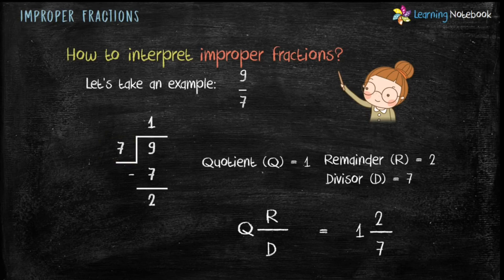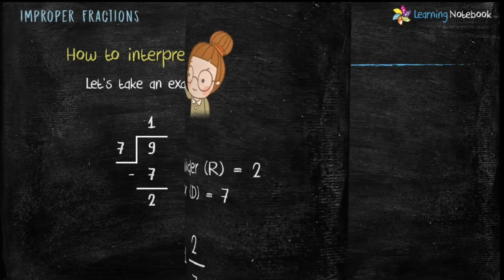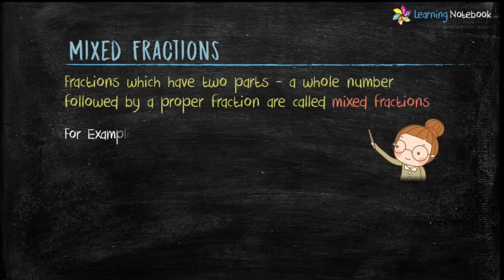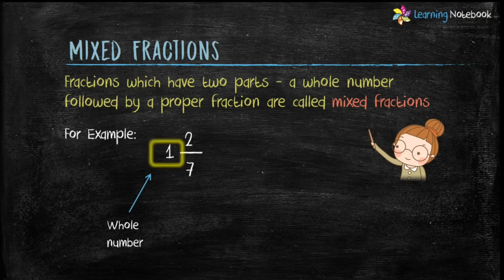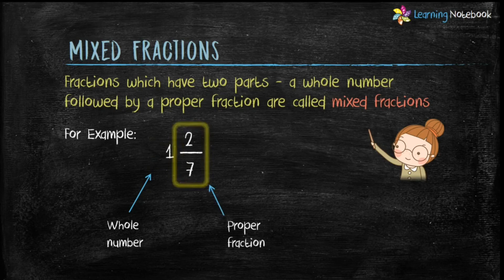Students, this form is called a mixed fraction. Fractions which have two parts, a whole number followed by a proper fraction, are called mixed fractions. Like in this example, 1 is a whole number and 2 by 7 is a proper fraction.